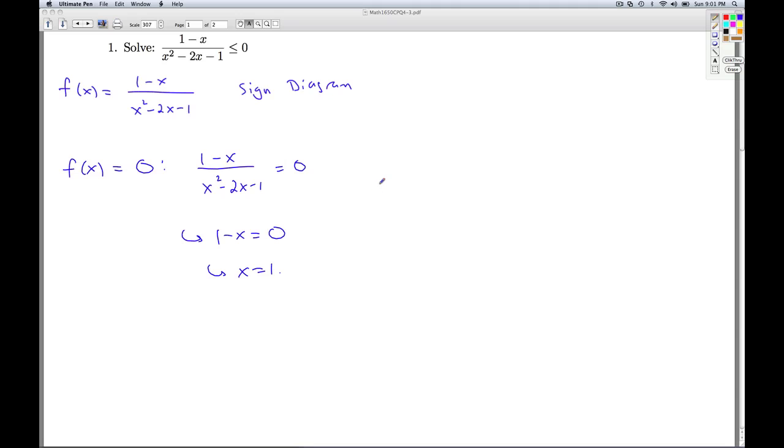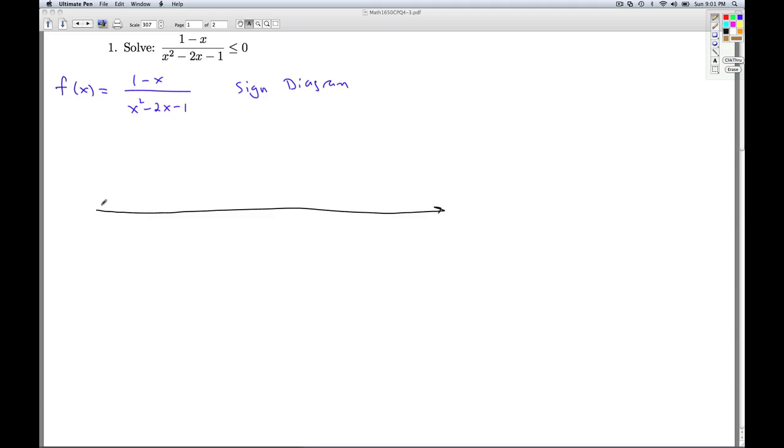So now I have all the points I need to make my sign diagram. So to make the sign diagram, remembering we're looking for where the function is positive and negative. And with a rational function, that could happen one of two places: it could happen at a vertical asymptote or a hole in the graph (in other words, places where the denominator is zero), or it could happen at an x-intercept, which are the zeros of the function. So the values we need to put on the number line were one plus or minus square root two (that's where the function was undefined), and x equals one, which is where the function was zero.